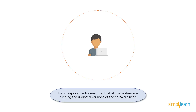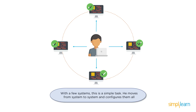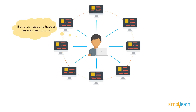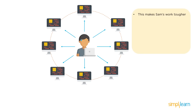Now when you consider a handful of systems, this seems like a pretty simple task. SAM can simply go from system to system and perform the configurations required. But that is not the case with an organization. An organization has a very large infrastructure — it could have hundreds and thousands of systems. So here is where SAM's work gets really difficult. SAM has to move from system to system performing the same task over and over again.